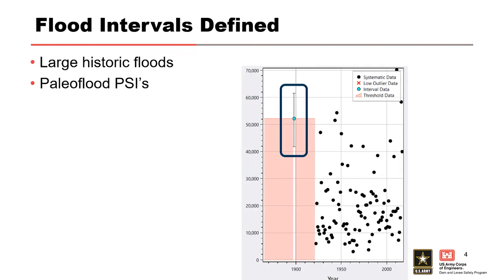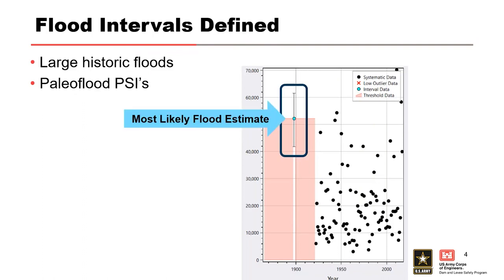When we talk about interval data, we're looking for observed flood events where the magnitude is not known exactly, but is usually reasonably known to fall within a certain range of flow values. Flood intervals are typically used to represent large historic floods and paleo flood PSIs, or paleo stage indicators. In RMC Best Fit, we want to define the most likely value for our observed floods, and also define the range of uncertainty by including an upper and a lower estimate. On the RMC Best Fit chronology plot, the cyan point represents the most likely flood estimate, and the whiskers display the upper and lower flood estimates.